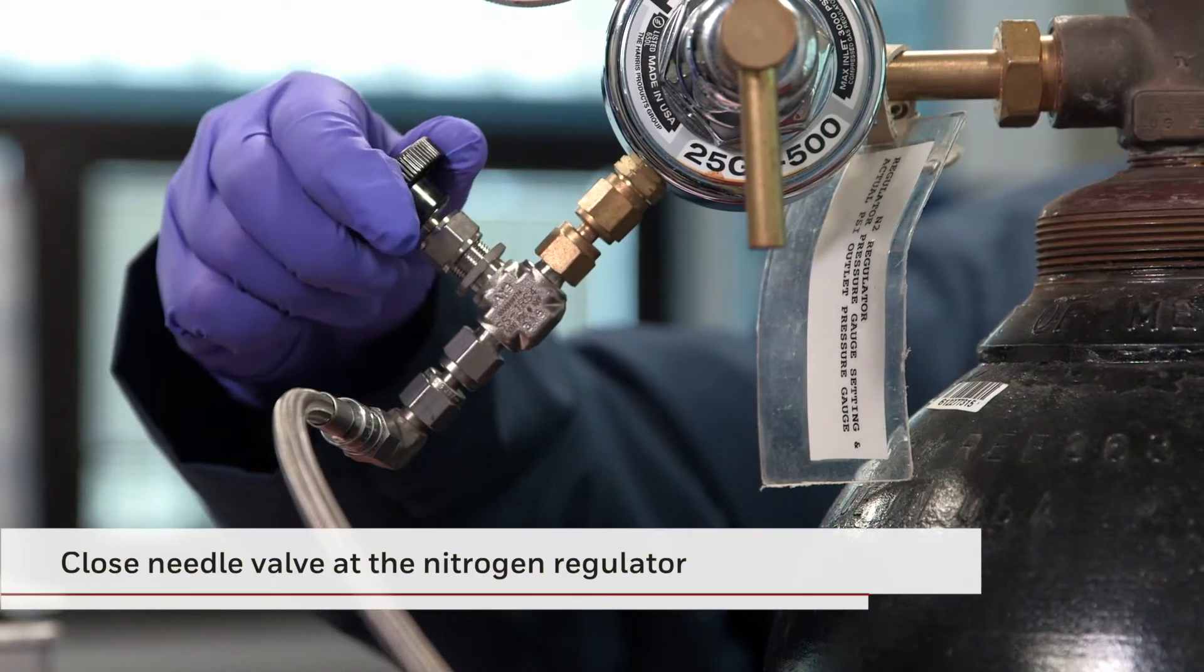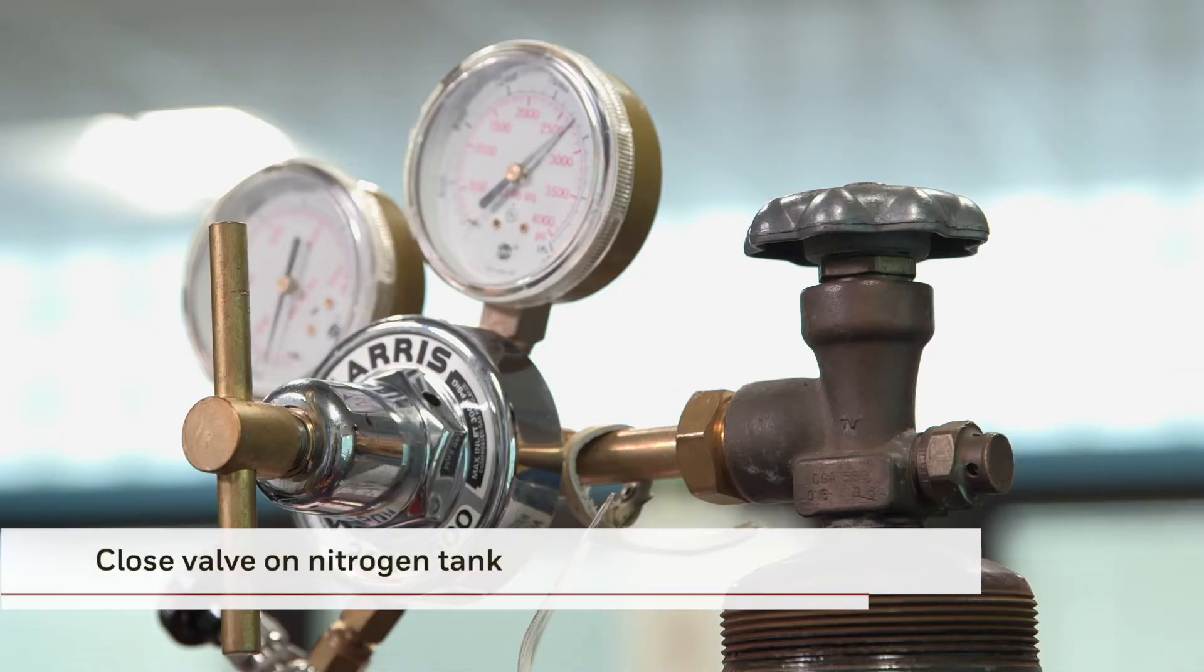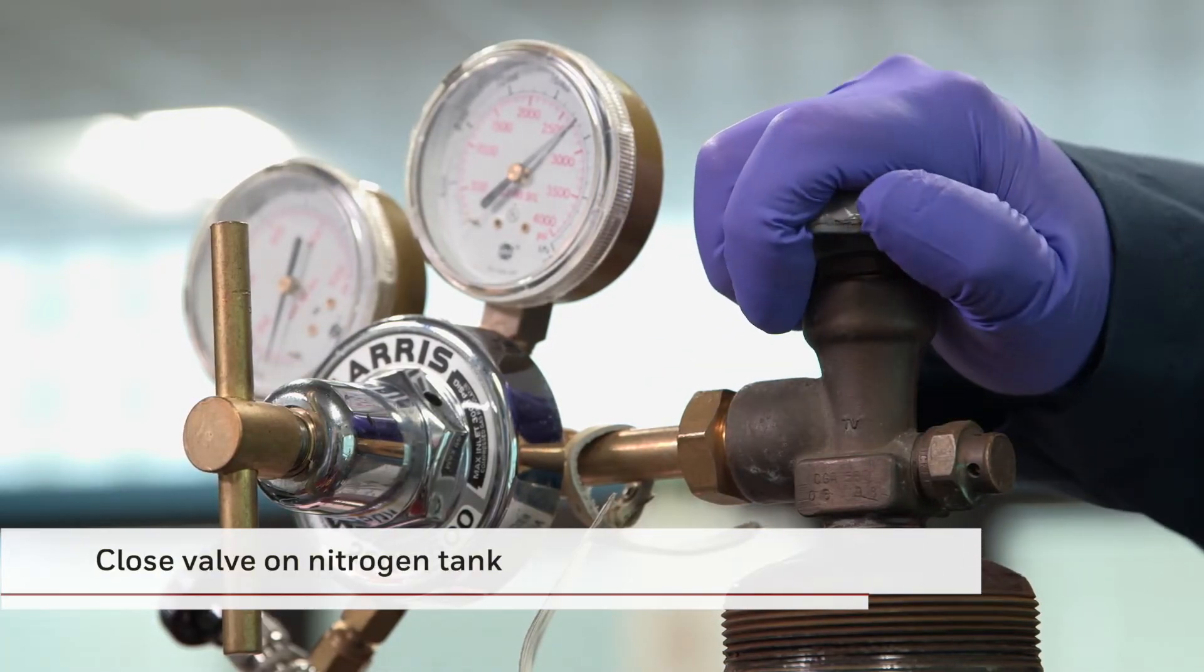Now, close the needle valve at the nitrogen regulator. Next, close the valve on top of the nitrogen tank to stop the flow of vapor.